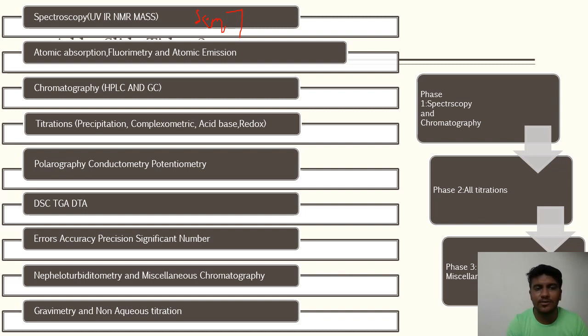In SEM 7 you are having spectroscopies like UV and IR. Now according to the PCI syllabus, NMR and mass is not included in the syllabus. It is an elective subject in SEM 8. If your college doesn't select that as an elective subject, you need to study it separately on your own either from YouTube channels or from the books.